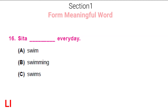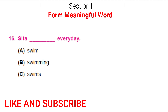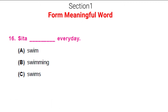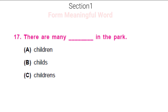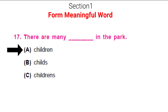In the next section, let's fill in the right verb tense. Sita dash everyday — choose from options A, B or C. Well, the answer is 'swims' everyday, because for one person there will be an S at the end of the verb. The next one: there are many dash in the path — is it children, childs or childrens? Choose the right plural. It is A, children — that is the correct one to be chosen here.